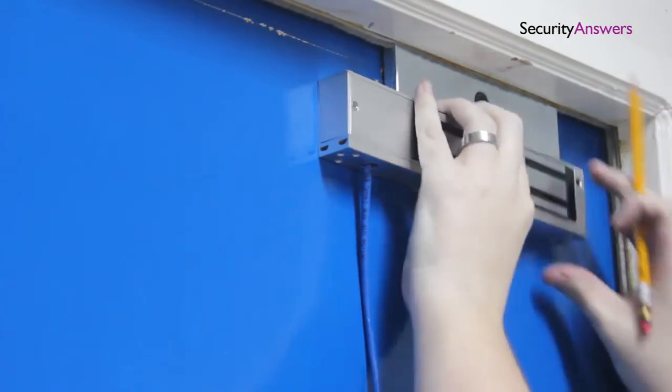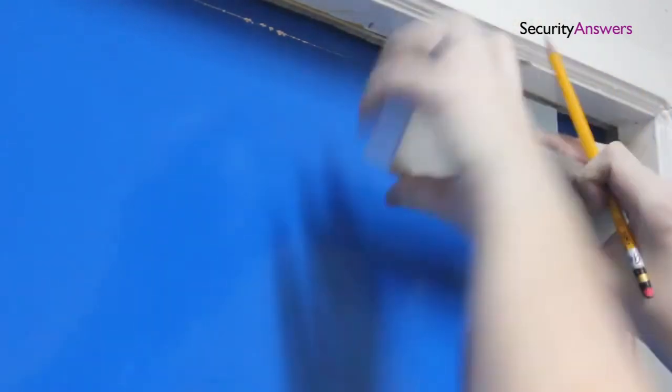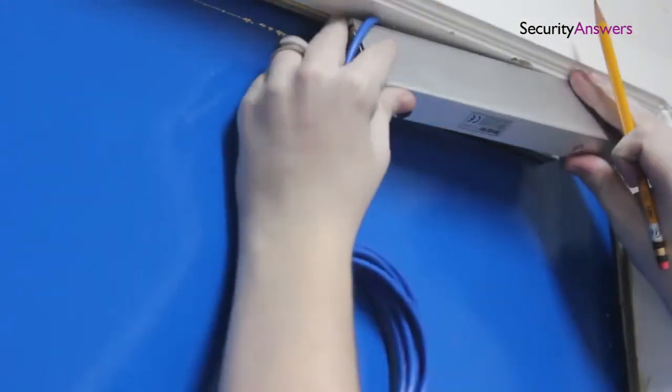A good tip would be to power on the EM lock and clamp it to the metal plate then mark off its position on the door frame.